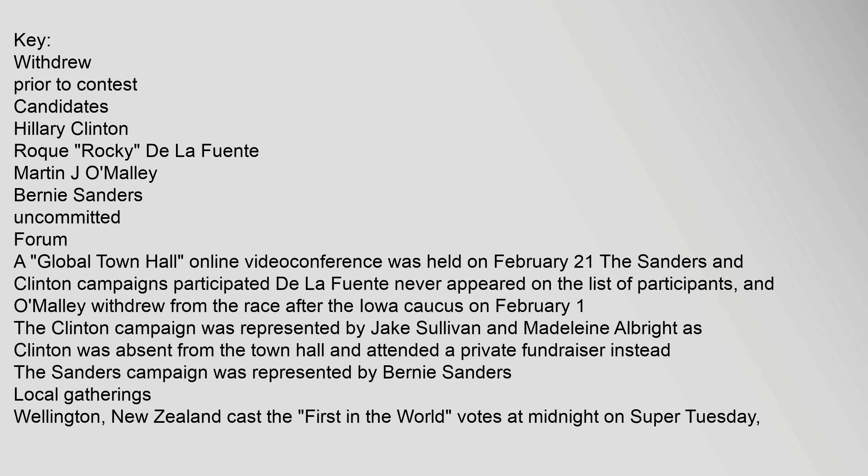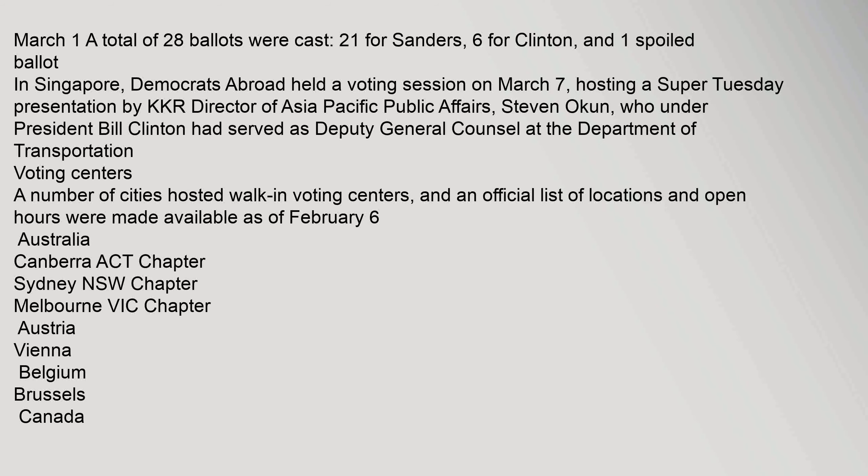Clinton was absent from the town hall and attended a private fundraiser instead. The Sanders campaign was represented by Bernie Sanders himself. Local gatherings: Wellington, New Zealand cast the first-in-the-world votes at midnight on Super Tuesday, March 1st. A total of 28 ballots were cast — 21 for Sanders, six for Clinton, and one spoiled ballot. In Singapore, Democrats Abroad held a voting session on March 7th, hosting a Super Tuesday presentation by KKR Director of Asia Pacific Public Affairs Stephen Okun, who under President Bill Clinton had served as Deputy General Counsel at the Department of Transportation.